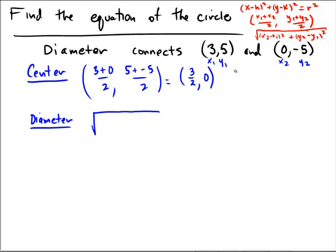x2 minus x1, so 0 minus 3 squared plus y2 minus y1, so negative 5 minus 5 squared, which equals square root of 9 plus 100. So we get the radical of 109.